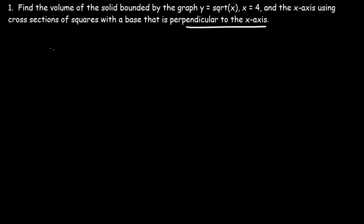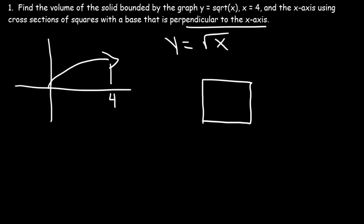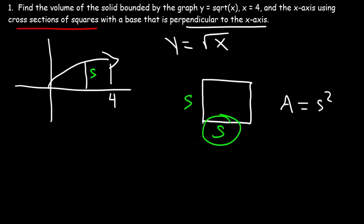Let's go ahead and draw a graph. y is equal to the square root of x, bounded by the x-axis and the line x equals 4. If we draw the cross sections as squares, the area of a square is side squared. S is perpendicular to the x-axis and represents the base of the cross section.